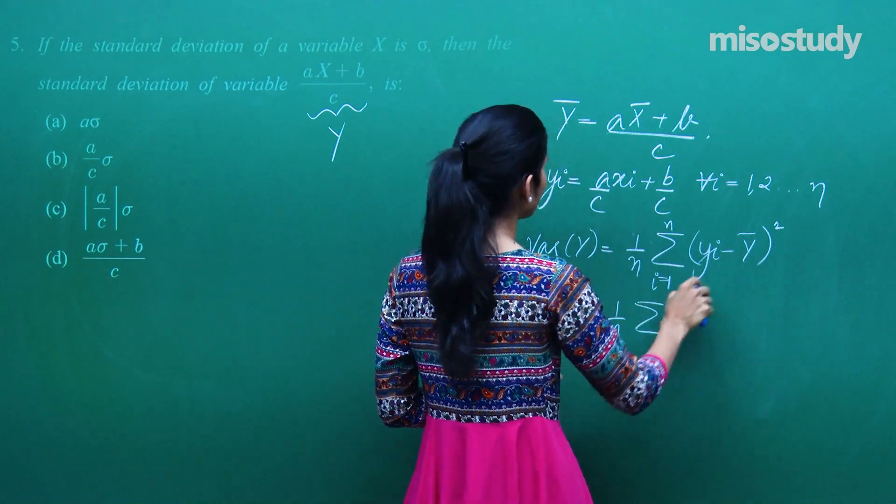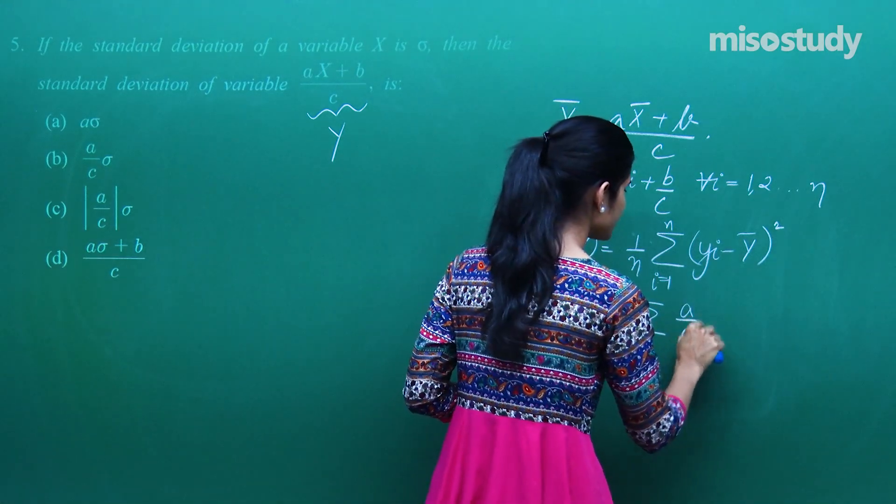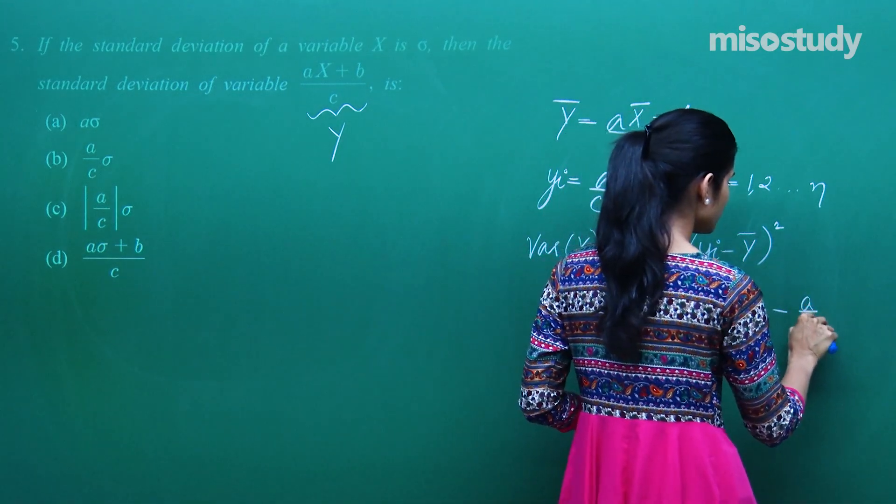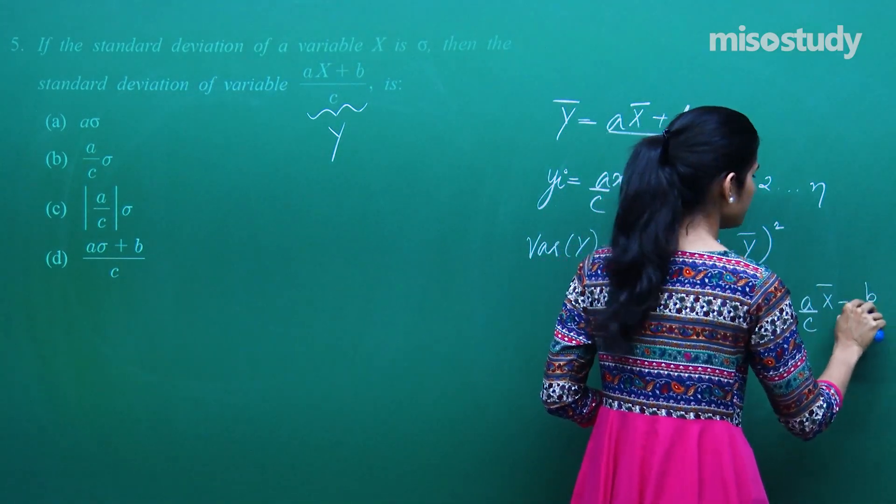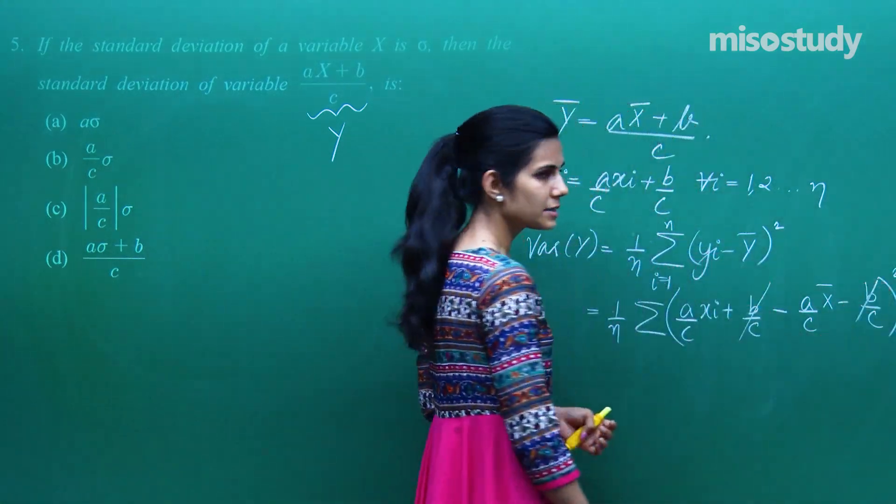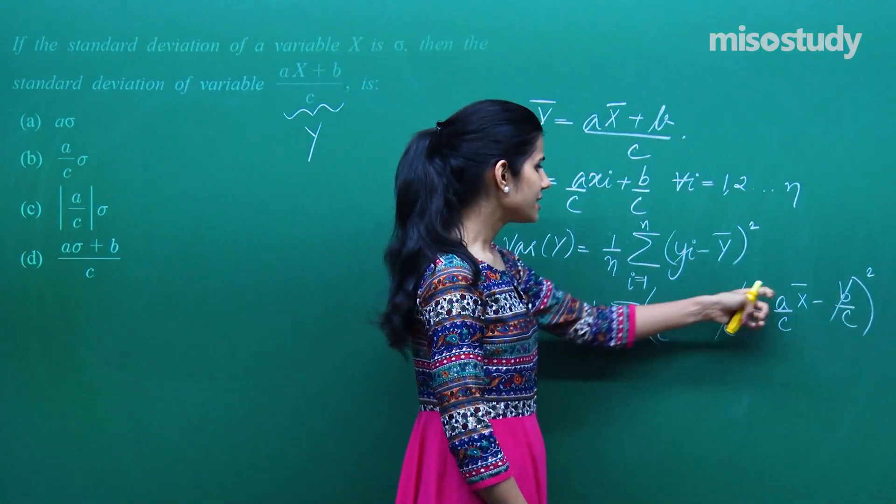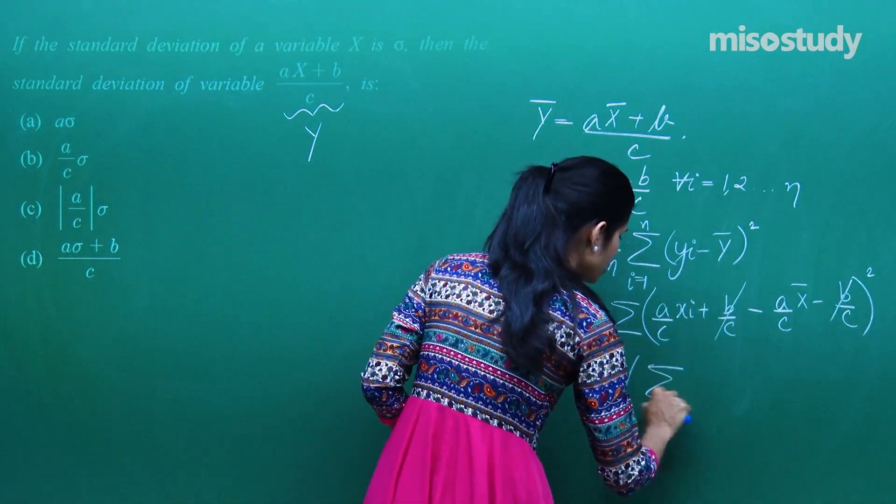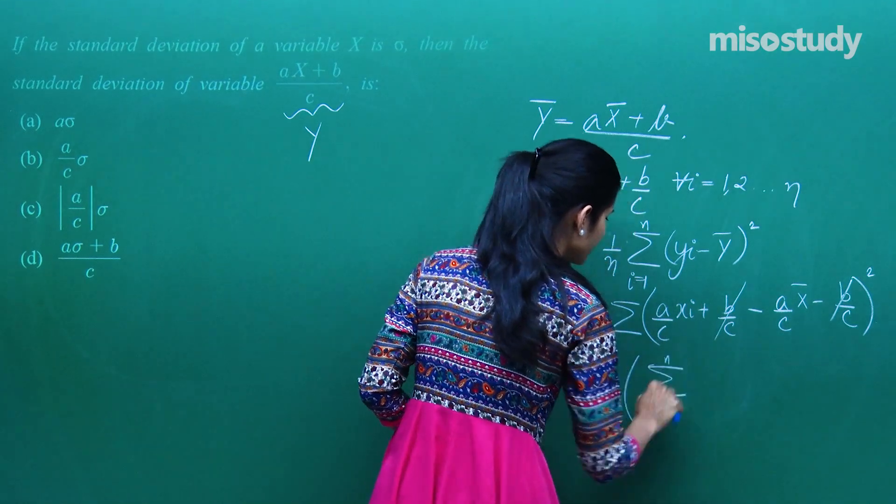Ye ban jayega, yi is what? a by c xi plus b by c, and y bar is a by c x bar and then b by c. Iska whole square. So minus b by c plus b by c cancels out. a by c, a by c common nikalega square ke saath, a square by c square.